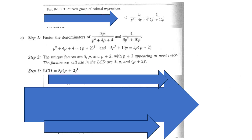Let's move on and look at a more complicated example. We want to find the least common denominator of each group of rational expressions. The group we have here is 3p over p squared plus 4p plus 4, and the second rational expression is 1 over 5p squared plus 10p. So in step 1, we factor the denominators: p squared plus 4p plus 4 equals p plus 2, whole squared. And 5p squared plus 10p equals 5p times the quantity p plus 2. The unique factors then are 5, p, and p plus 2.